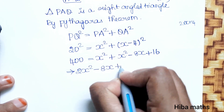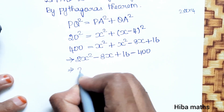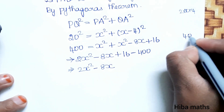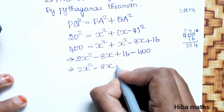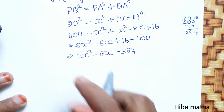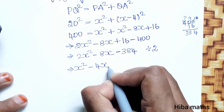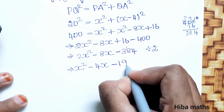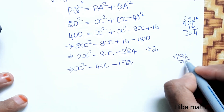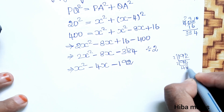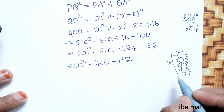So 400 equals 2x² minus 8x plus 16. Rearranging: 2x² minus 8x plus 16 minus 400 equals 0, giving 2x² minus 8x minus 384 equals 0. Dividing all terms by 2: x² minus 4x minus 192 equals 0. Now factorizing 192 to solve for x.